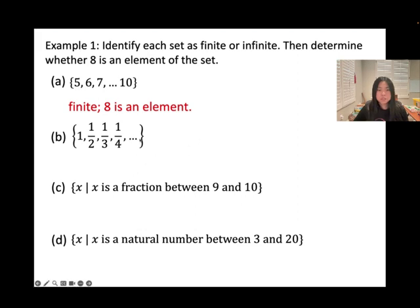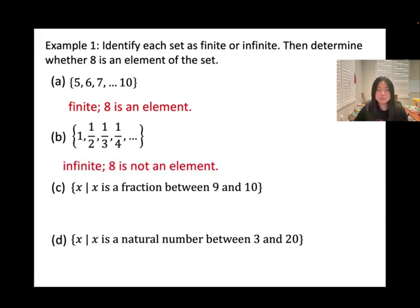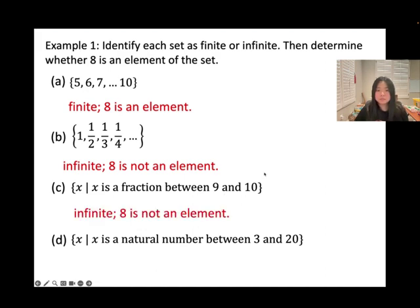For (b), we have dot dot dot so this is an infinite set. The set contains 1, 1/2, 1/3, 1/4, ... so 8 is not an element of this set. For (c), the set builder notation defines the set of all X such that X is a fraction between 9 and 10 — fractions can be infinitely small, so this is an infinite set, and 8 is not an element. For (d), the set of all X such that X is a natural number between 3 and 20 — we have an ending number of 20, so this is a finite set, and 8 is an element.